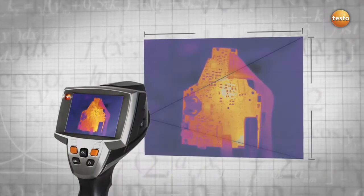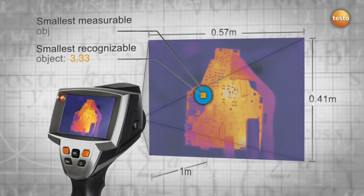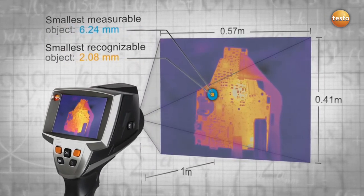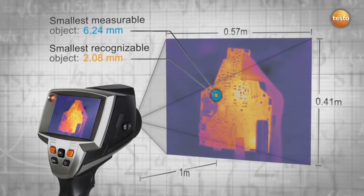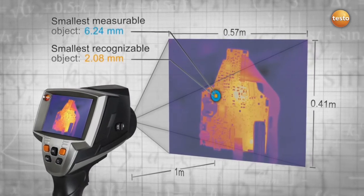The Super Resolution technology leads to more meaningful thermal images, but that's not all. As your smallest measurable object decreases in size, you are still able to detect more details while maintaining the same distance to your measured object.